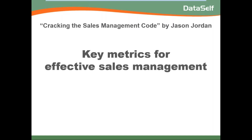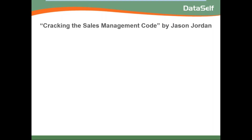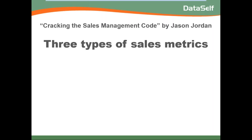One of the most interesting things Jordan did was ask the question: can we actually manage this metric? If you're trying to manage your sales team using all these metrics, can you really control them? What he found is that out of those 300-plus metrics, there are three distinct types of sales metrics.